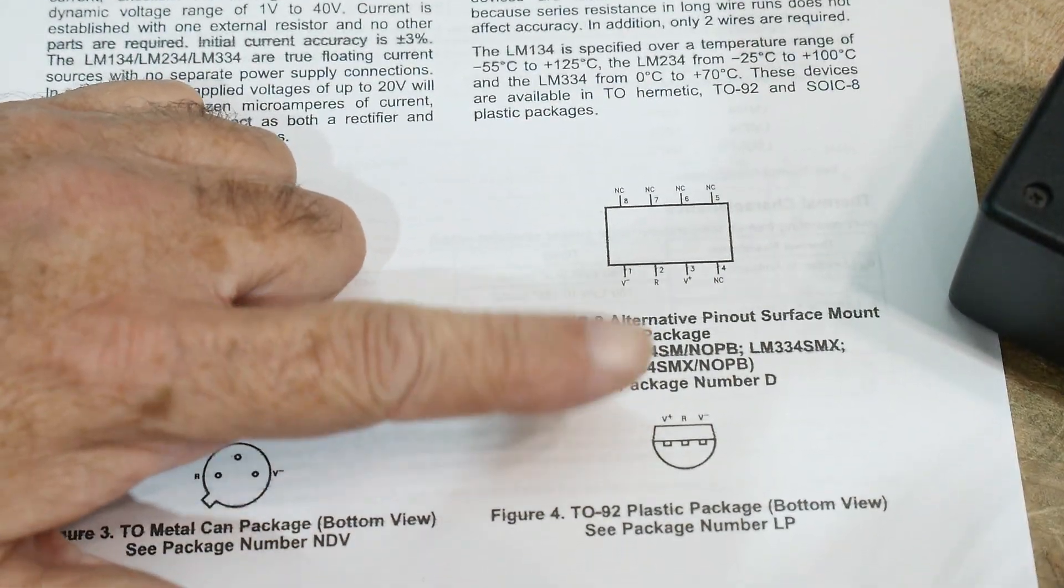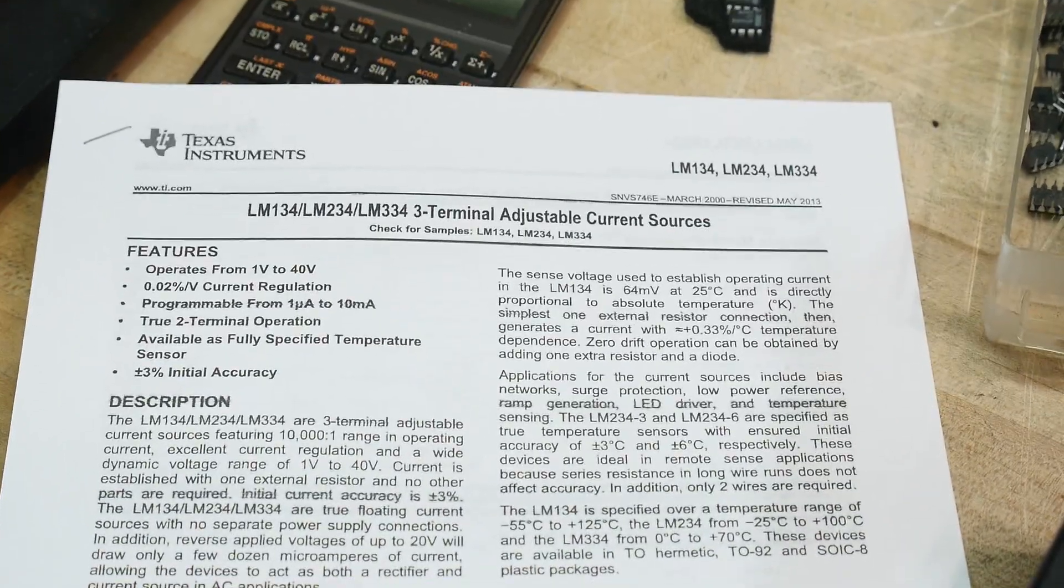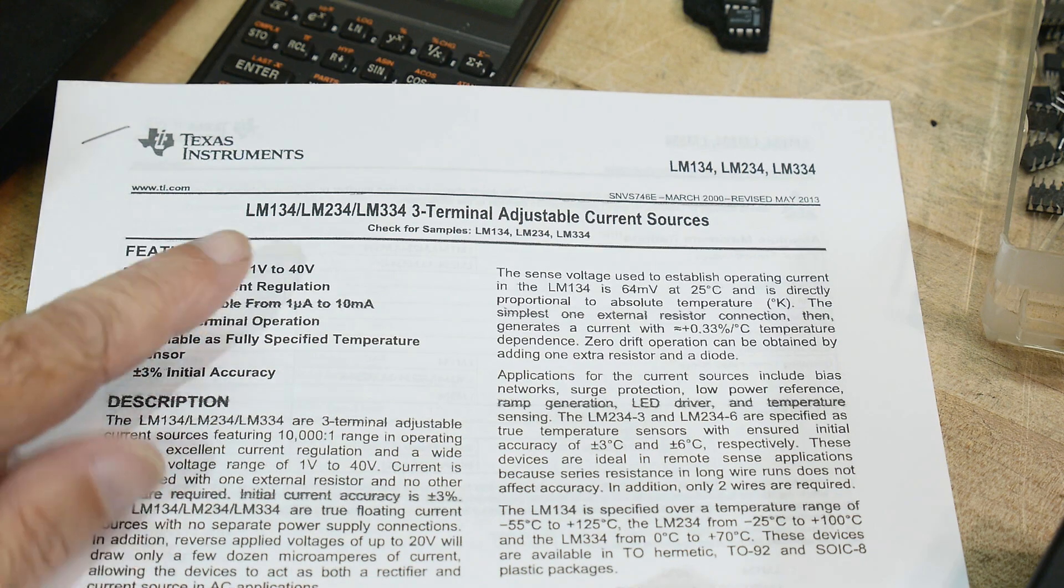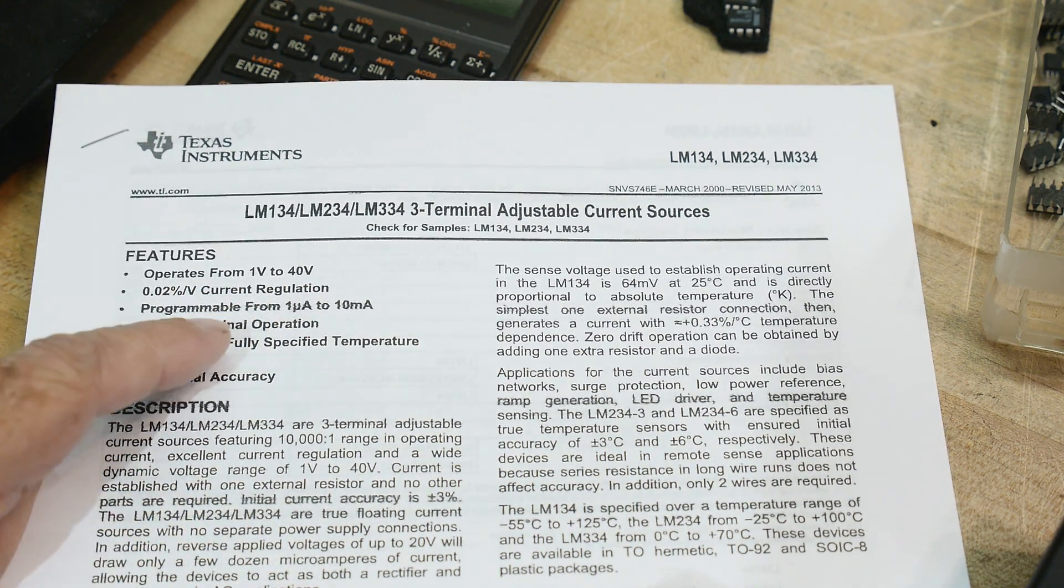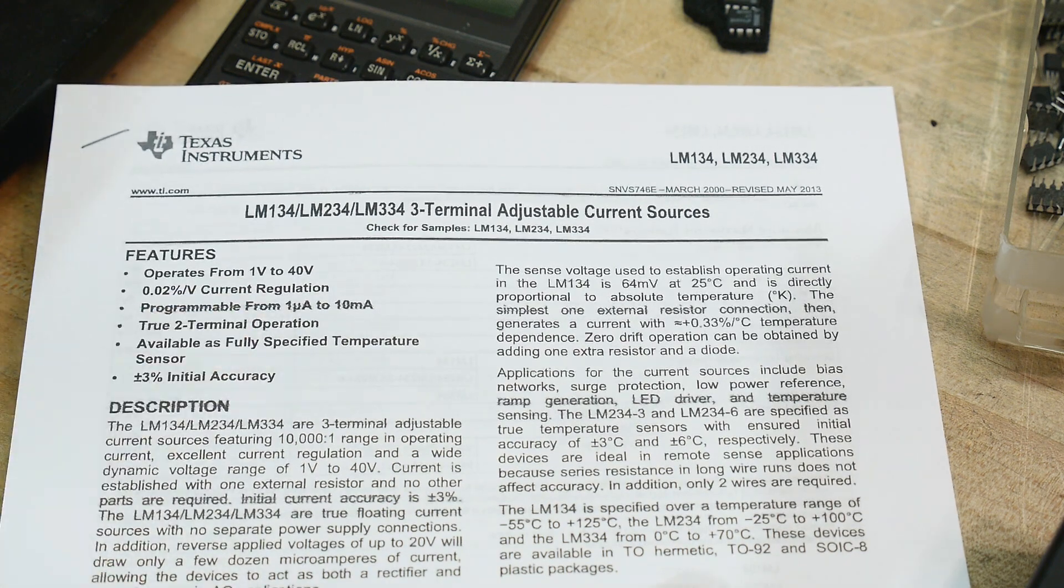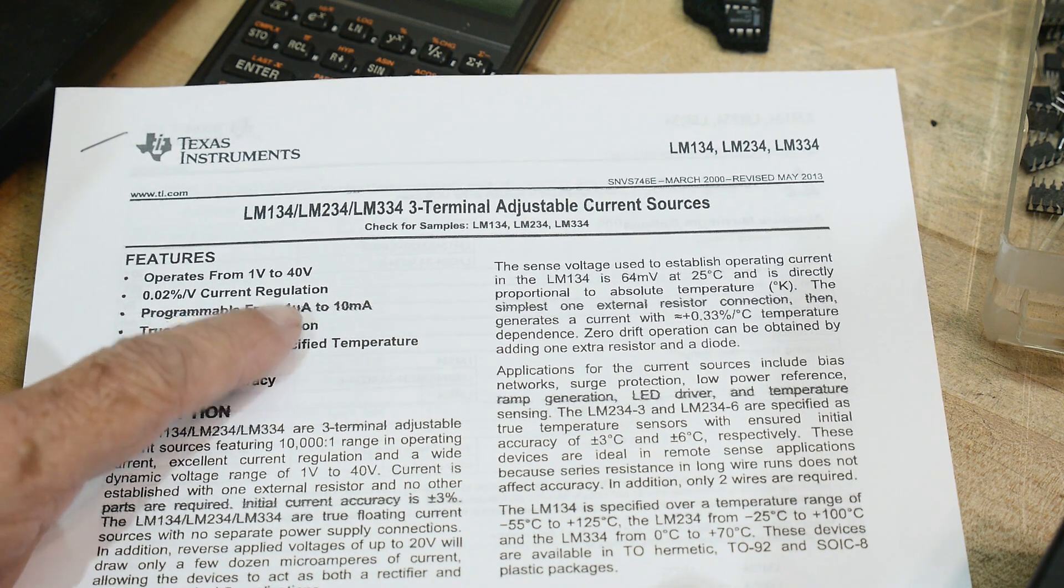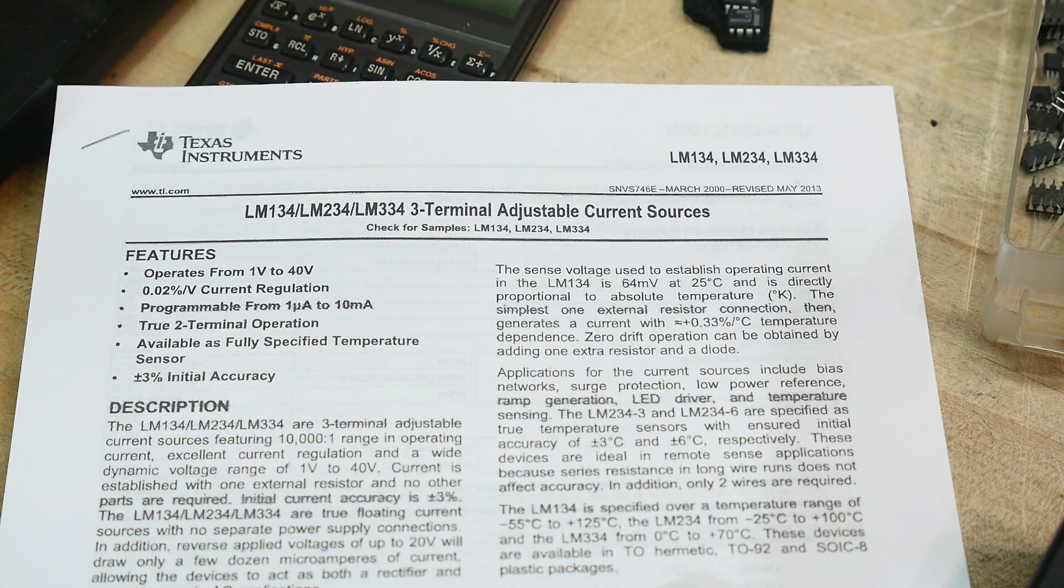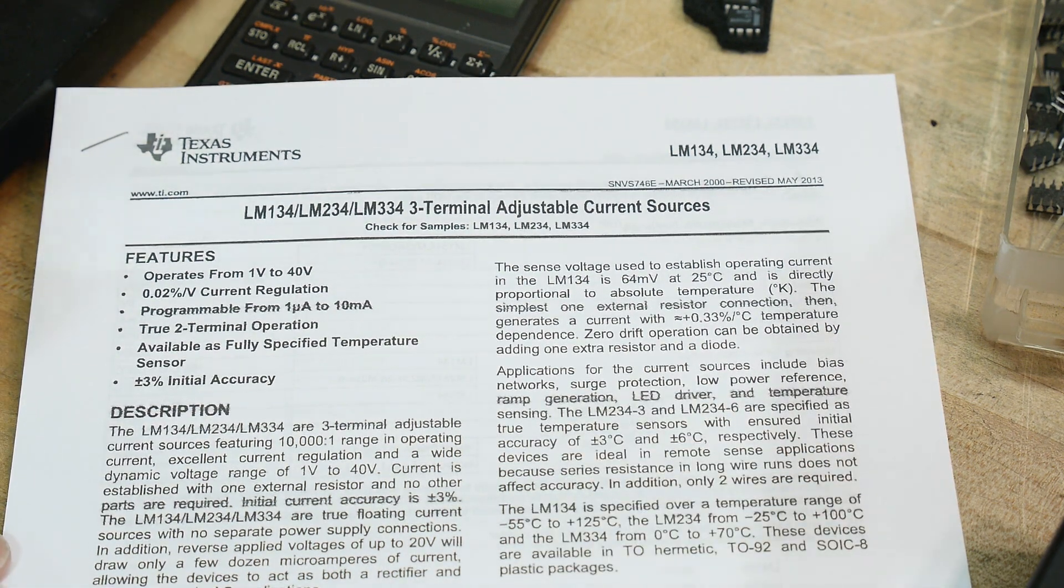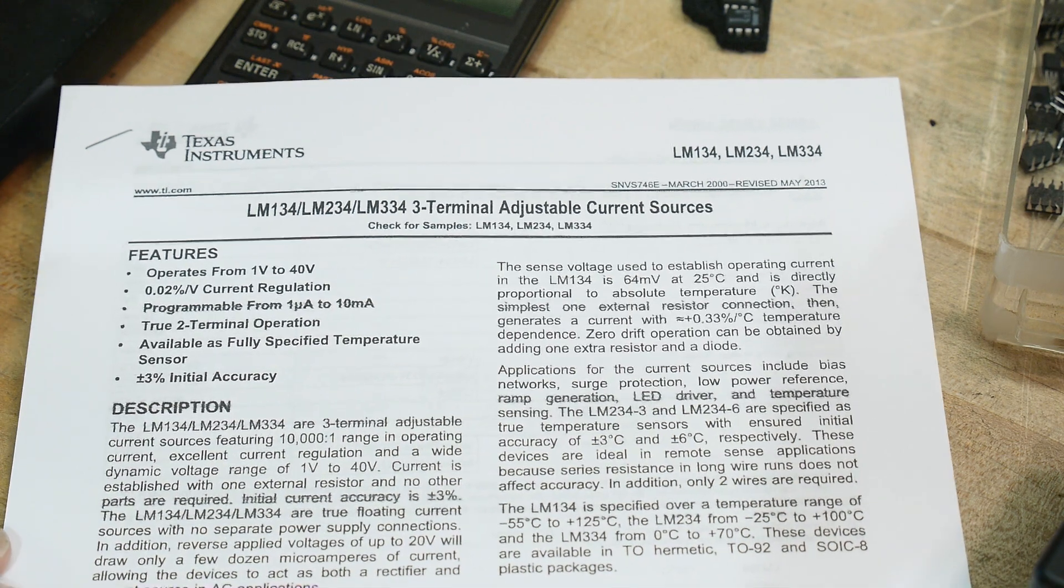It's just a regular TO-92, but its third pin allows you to regulate current. It operates up to 40 volts, 0.02% per volt current regulation, programmable from 1 microamp to 10 milliamps. It's a really cool part, but I doubt that you've seen one.